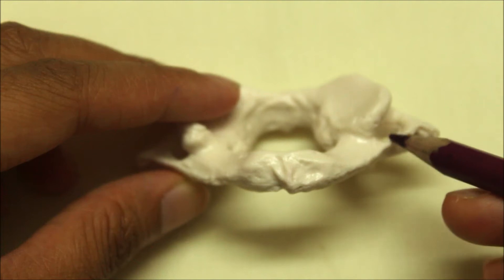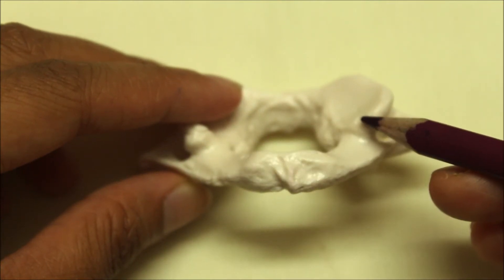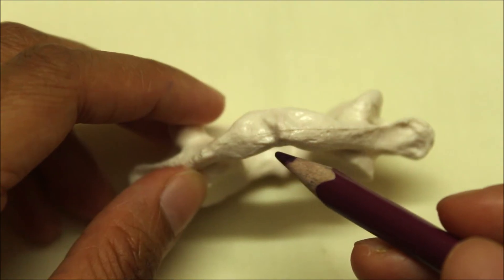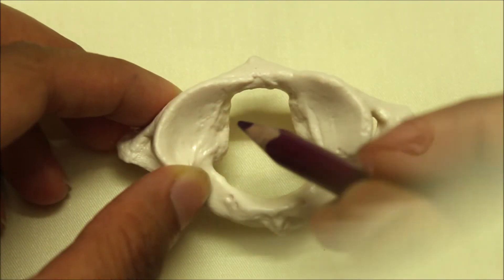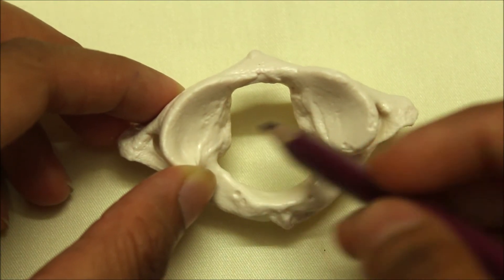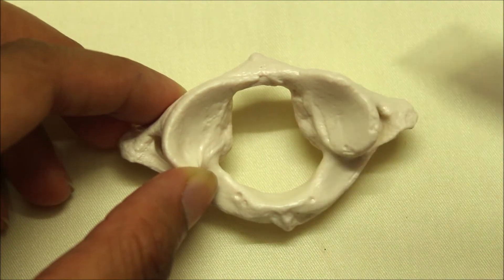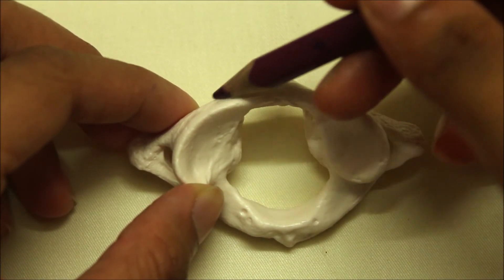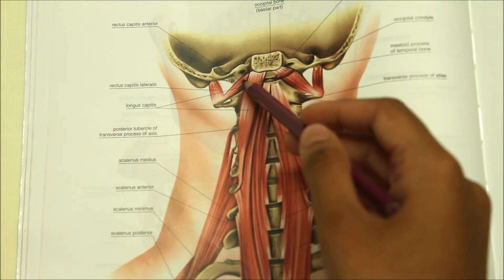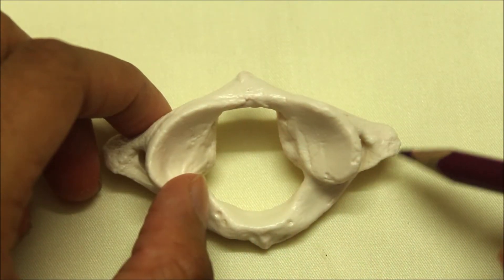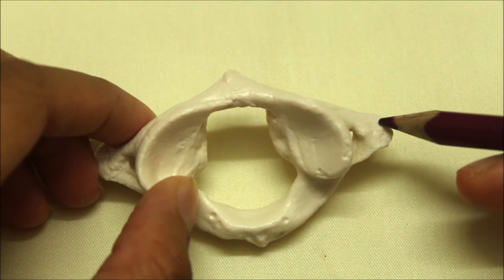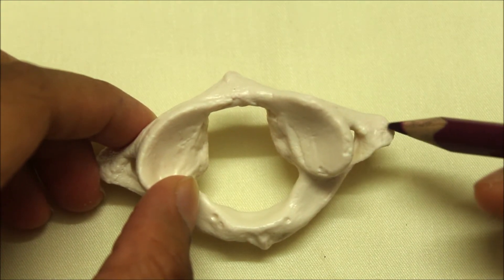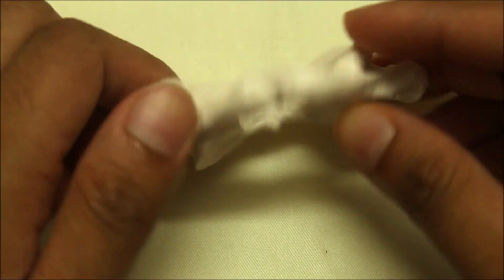Behind the groove, the upper border of the posterior arch provides attachment to the posterior atlanto-occipital membrane. The lower border of the posterior arch provides attachment to the highest pair of the ligamentum flava. The tubercle on the medial side of the lateral mass gives attachment to the transverse ligament of the atlas. The anterior surface of the lateral mass gives origin to the rectus capitis anterior. The transverse process gives origin to the rectus capitis lateralis from its upper surface anteriorly, the superior oblique from its upper surface posteriorly, and the inferior oblique from its lower surface.